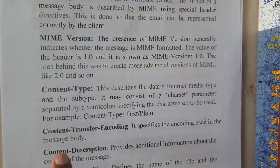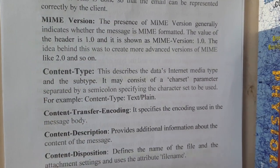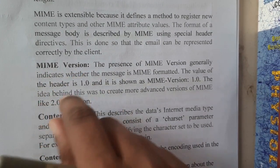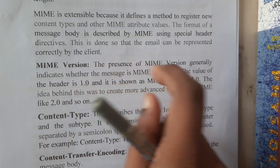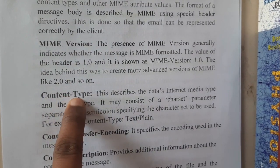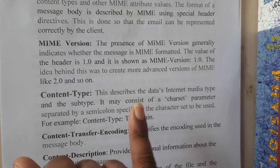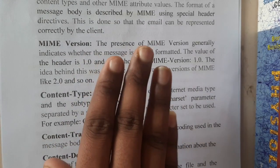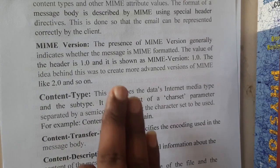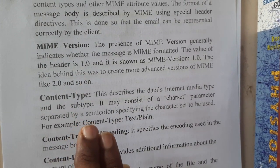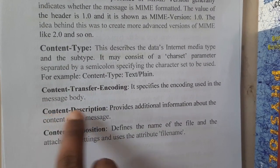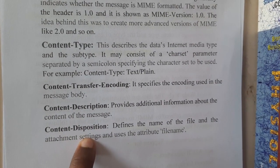Each MIME mail has four or five components. The MIME version is maintained because encoding and security are applied, and the receiver needs to decode it. The content type specifies the character set — whether it is plain text or UTF-8 — because if you send a message in Chinese but the receiver reads it in English, it won't work. Content transfer encoding is also mentioned, along with a description providing additional information.